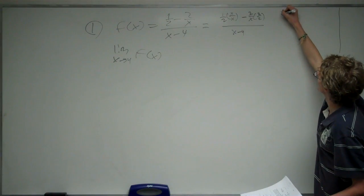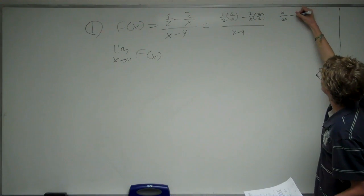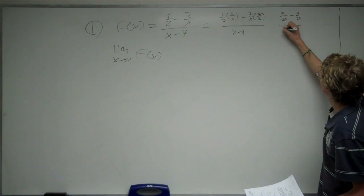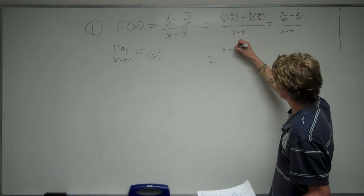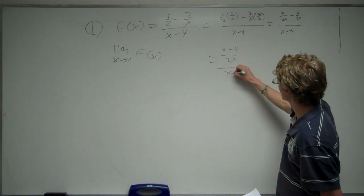So, we've got x over 2x minus 4 over 2x. And that's going to give us x minus 4 over 2x, all over x minus 4.